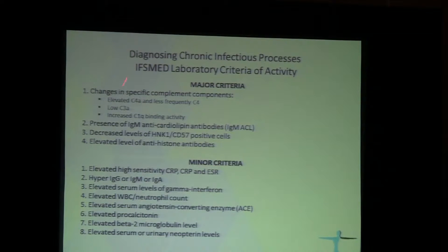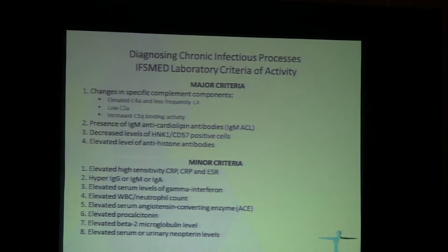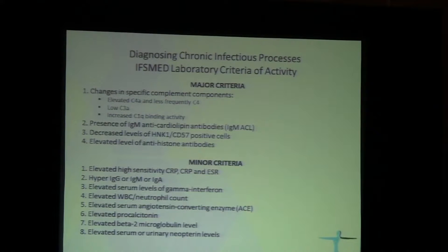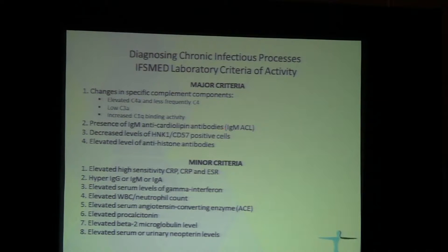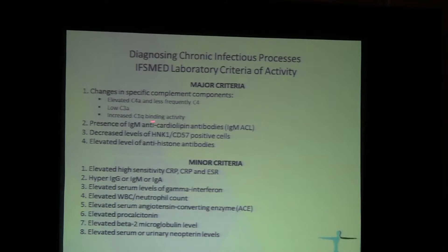The next criterion is low C3A, which is also nonspecific but can be seen in patients with chronic infections during exacerbation, along with increased C1Q binding activity — which is expected due to immune complex formation. Additionally, based on our statistical analysis, we identified the presence of IgM anti-cardiolipin antibodies as a criterion; patients with active chronic infections tend to have elevated IgM anti-cardiolipin antibody levels.